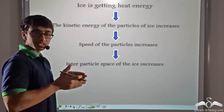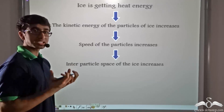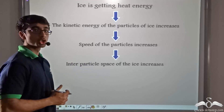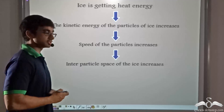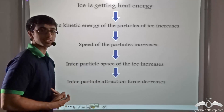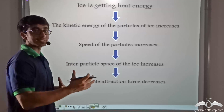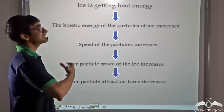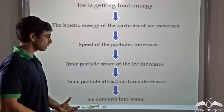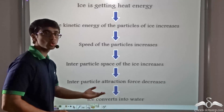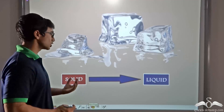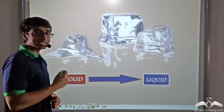Now when the spacing between particles increases, the attractive force will decrease because this attractive force is inversely proportional to the distance between the particles. Thus the inter-particle attractive force decreases. As a result of this, it expands — in other words, ice expands and is turned into water. This is how ice is converted into water.